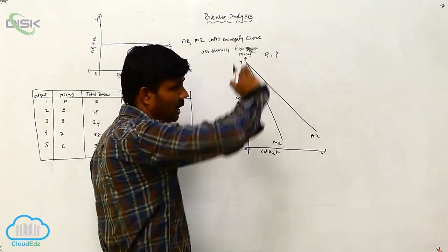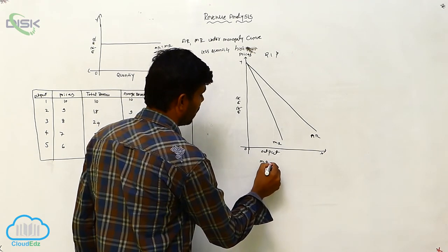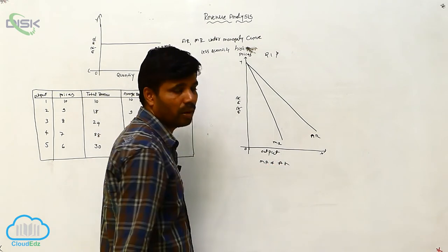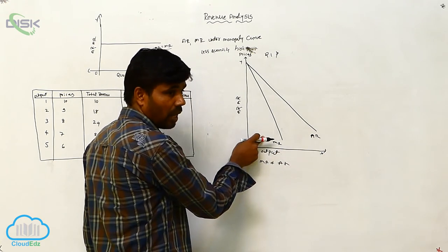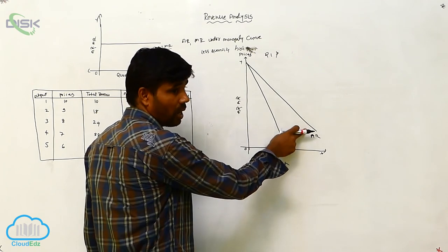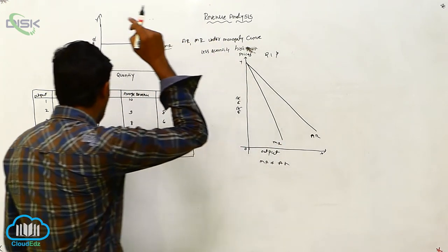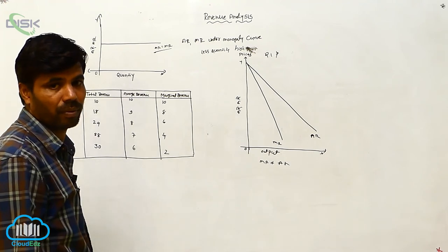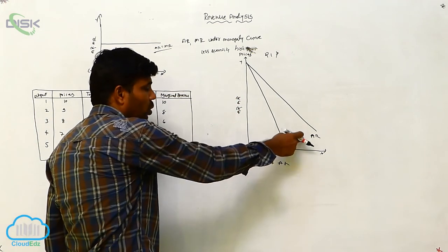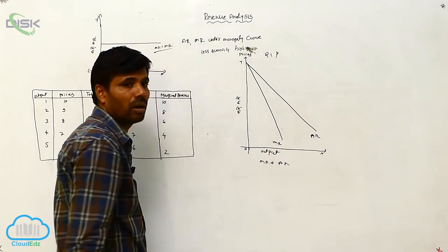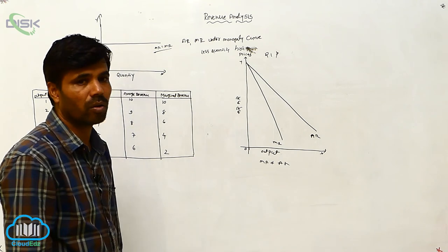The higher the quantity, the lesser the price — quantity and price both play a role here. A, R does not equal M, R; M, R does not equal A, R. The average revenue curve is higher, it also slopes left to right downward, but it is above the M, R line. M, R is below A, R. This is the relationship between A, R and M, R under the monopoly curve system.